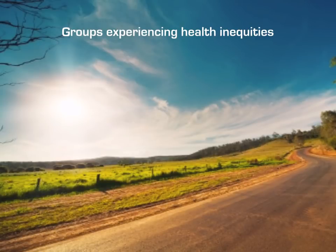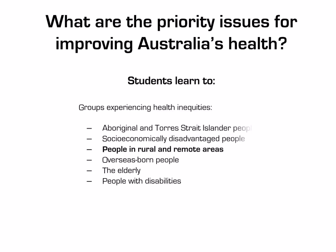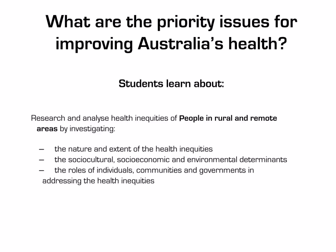This presentation will address groups experiencing health inequities with a specific focus on people in rural and remote areas. The syllabus suggests that students learn about Aboriginal and Torres Strait Islander peoples and also one other group experiencing health inequities, and we have chosen people in rural and remote areas. This presentation will assist you in your research and analysis, particularly the nature and extent of health inequities, the socio-cultural, socio-economic and environmental determinants, and the roles of individuals, communities and governments in addressing the health inequities.